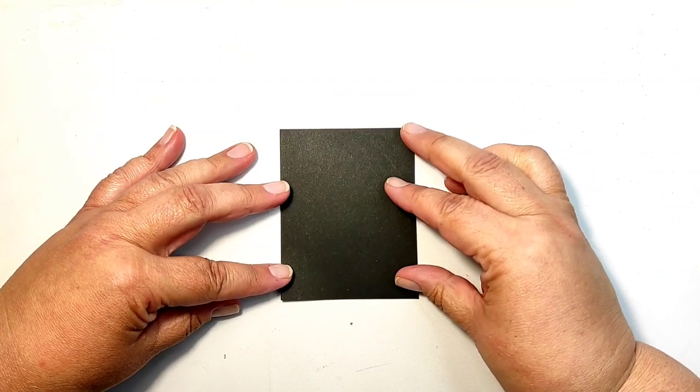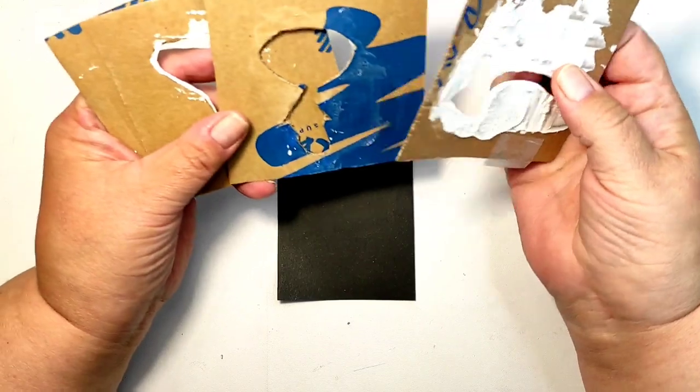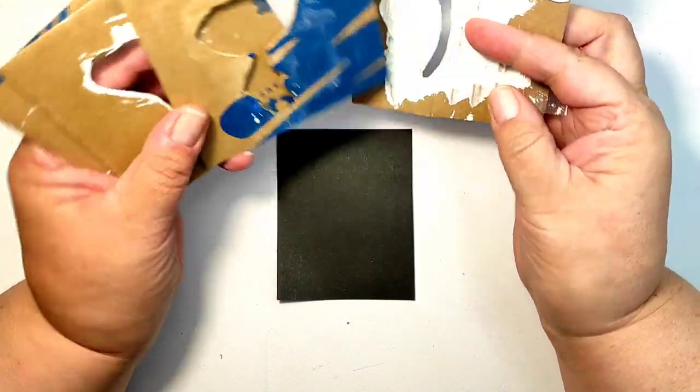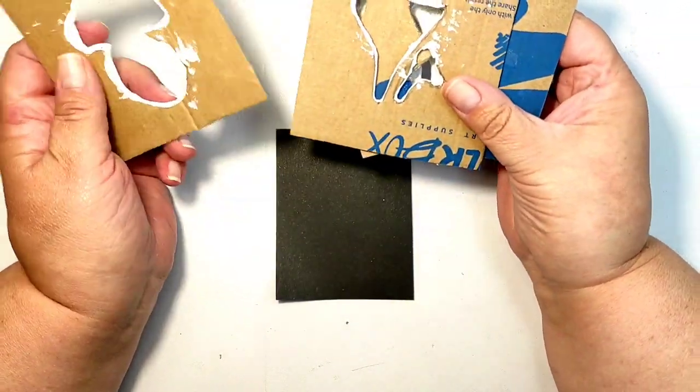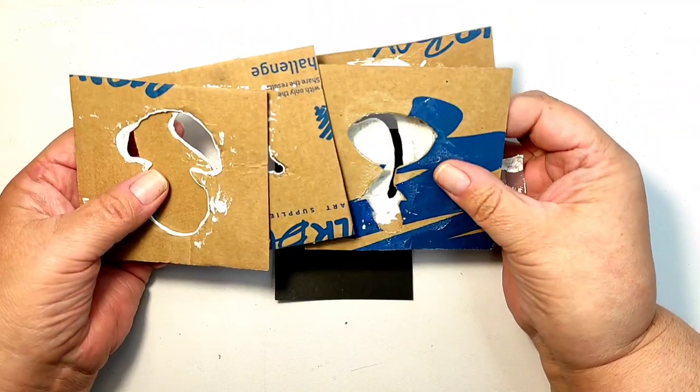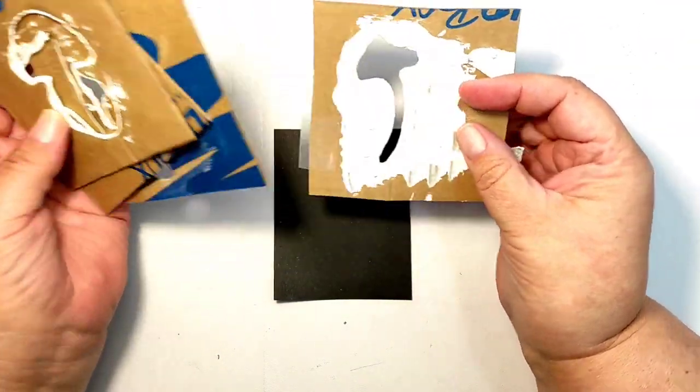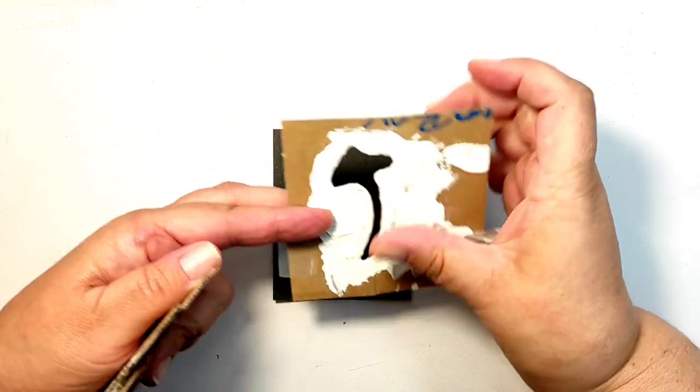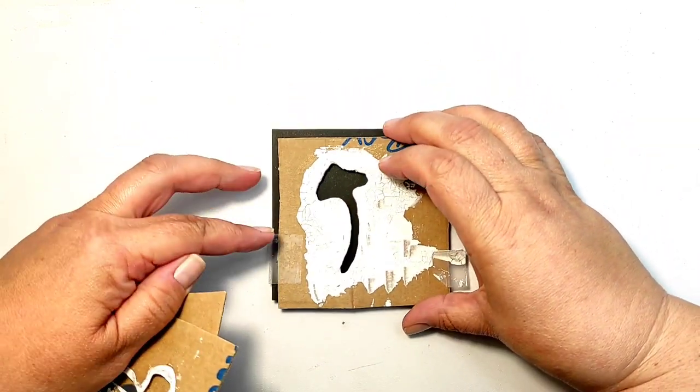We will start with the mushroom itself. For that I cut several stencils out of ordinary cardstock. I cut up a carton box to get the cardboard for my stencils and then I used scissors and cutting knife to cut out mushroom shapes.